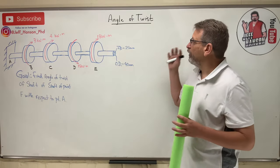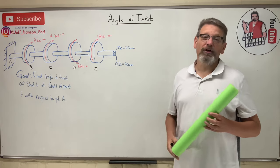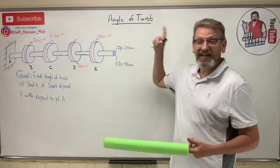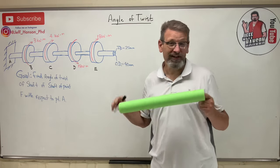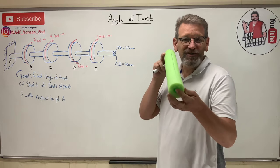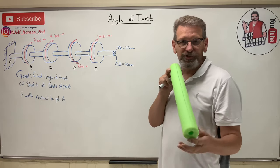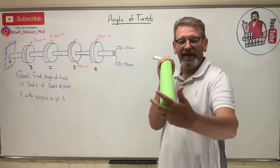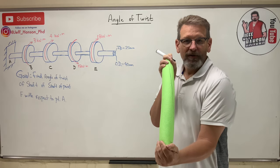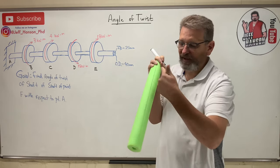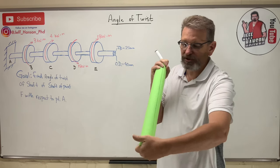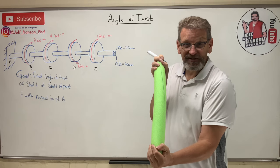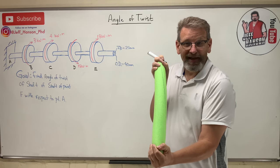Welcome to our next video. Today we're talking about angle of twist in a shaft due to torsion. Here's a shaft — I've drawn a line down this shaft to show that if I fix one end and start to twist the shaft, you can see it starts to deflect and this line turns into a spiral. The shaft actually twists when a torque is applied.